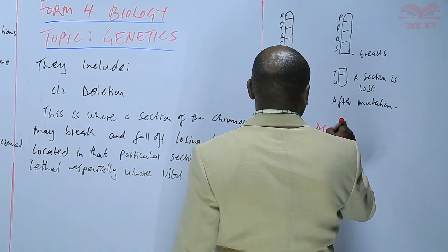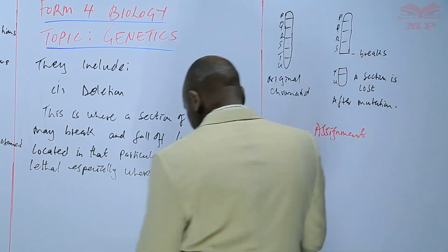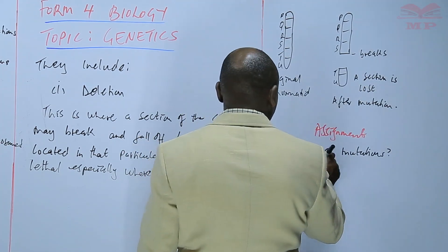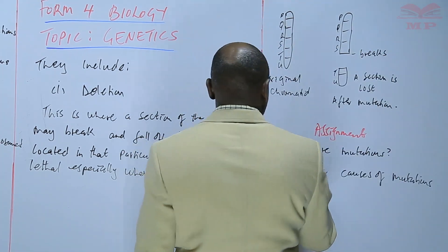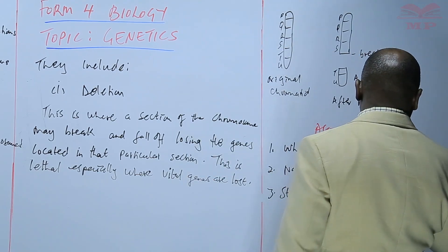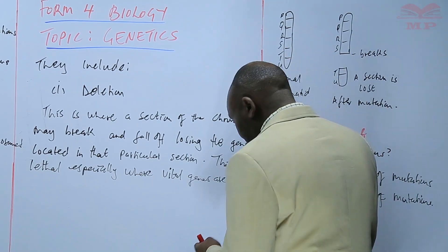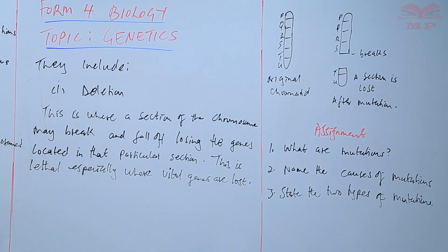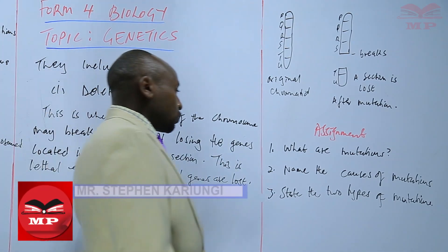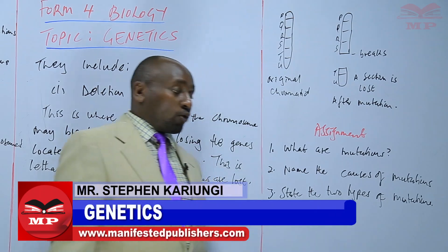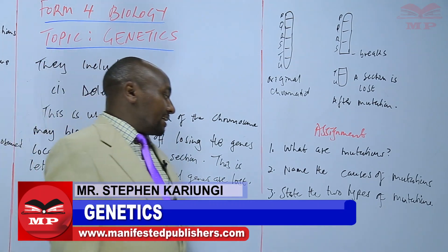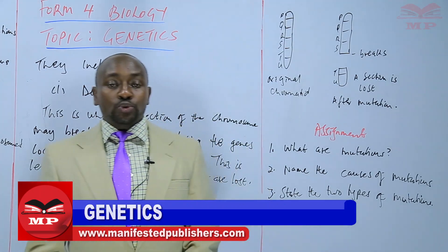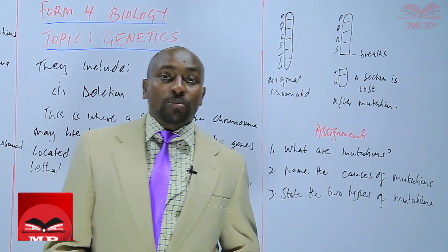We can have an assignment on this. The first question: what are mutations? Number two: name the causes of mutations. And lastly, number three: state the two types of mutations. We will stop there. Until next time, goodbye.